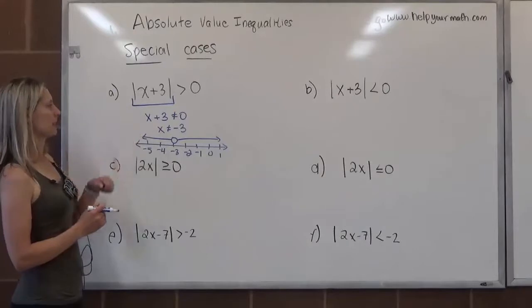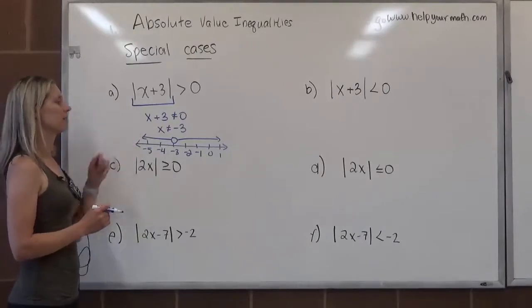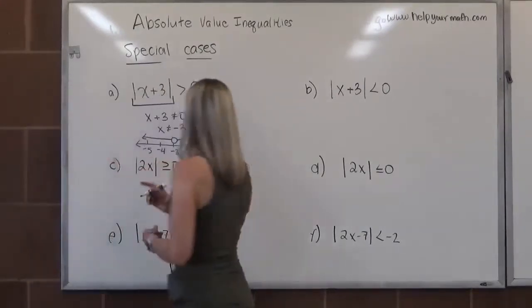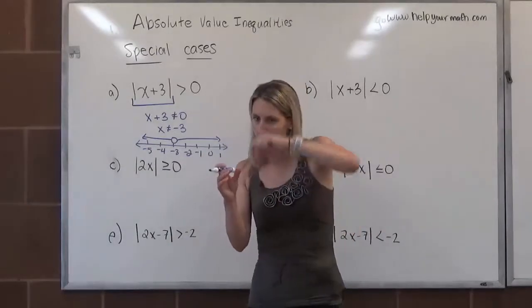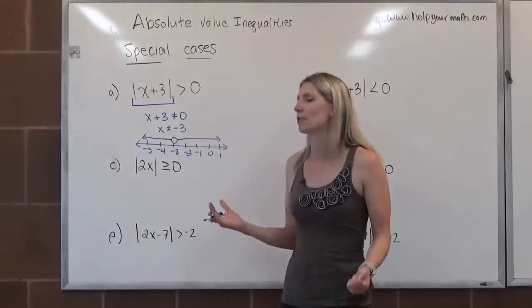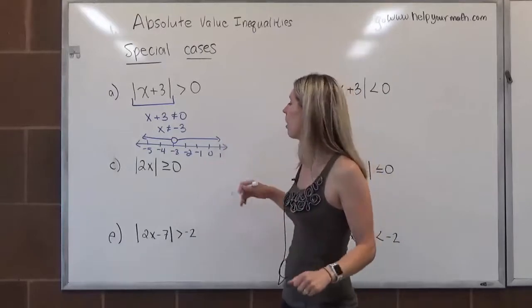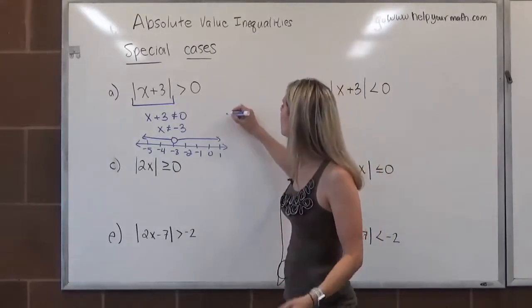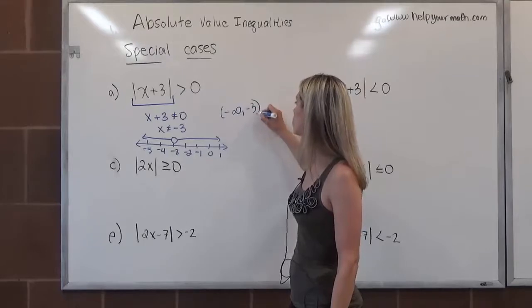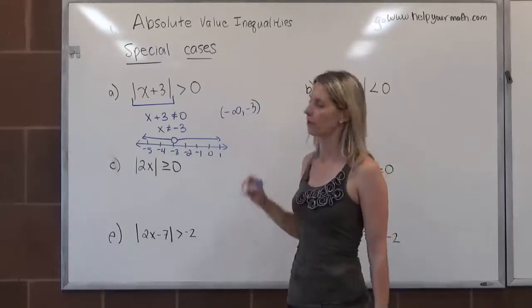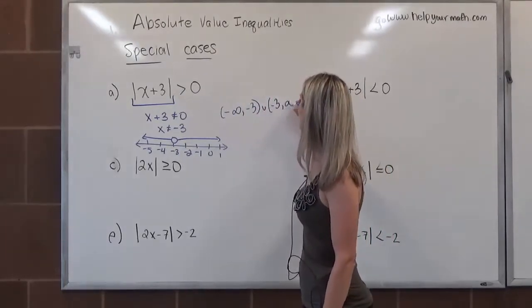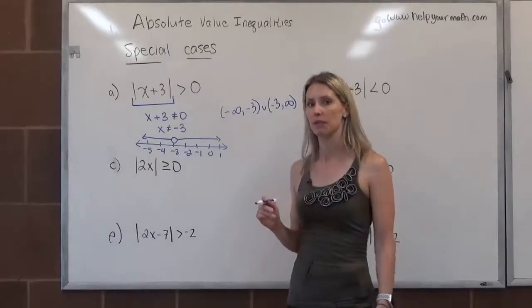So here's the algebraic form, the graphic, and then interval notation. It's like going on the number line and just plucking out that one single number, which makes the interval notation a bit long. We would say it's anything from negative infinity to negative 3, not including negative 3, and then also everything bigger than negative 3 — so negative 3 to infinity.